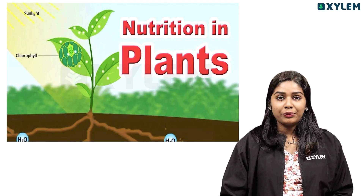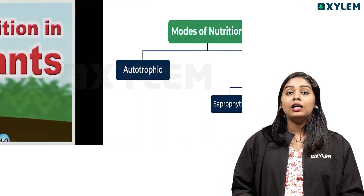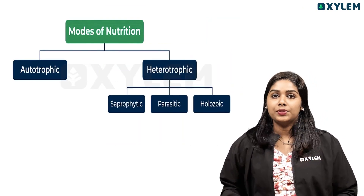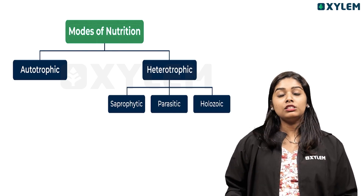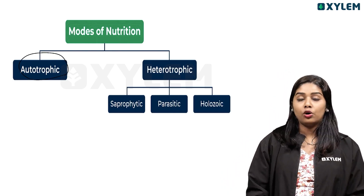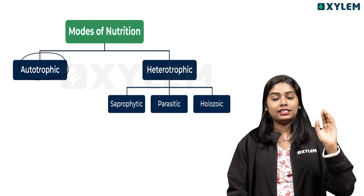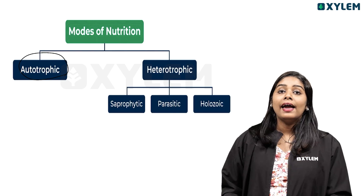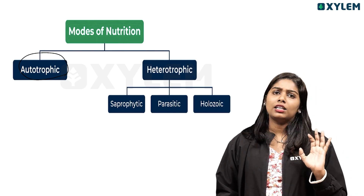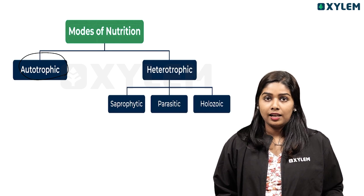We will go to the modes of nutrition. There are two types of major classifications. The first one is autotrophic nutrition, and the next one is heterotrophic nutrition.